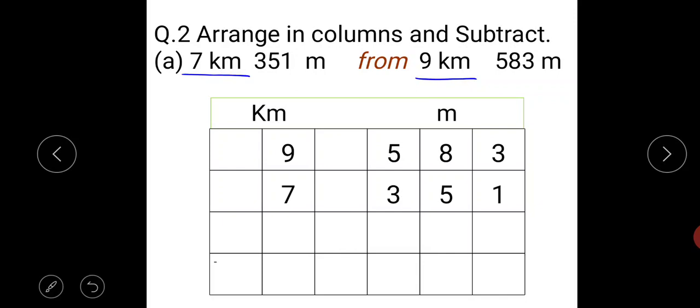So first of all arrange the numbers in columns. First of all we write bigger number. That is 9 kilometre, 583 metre. Then 7 kilometre, 351 metre.